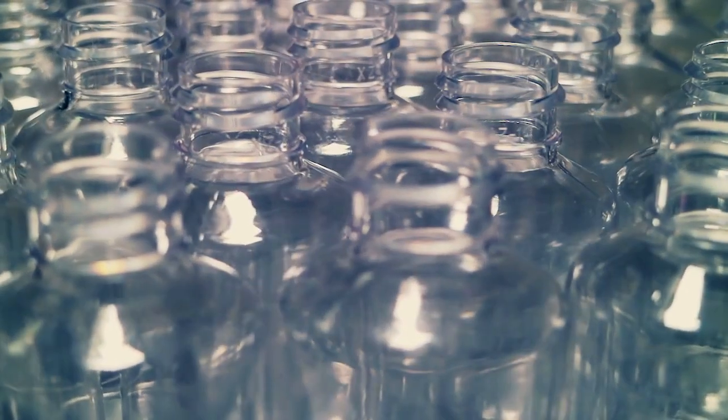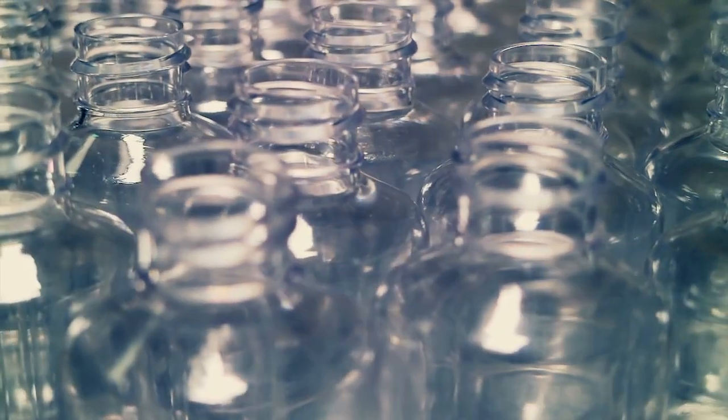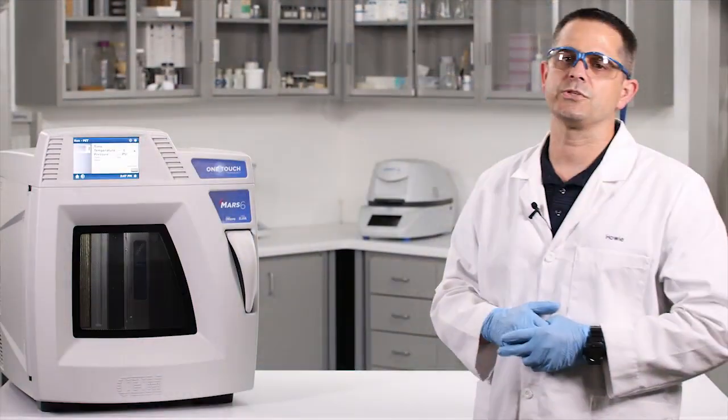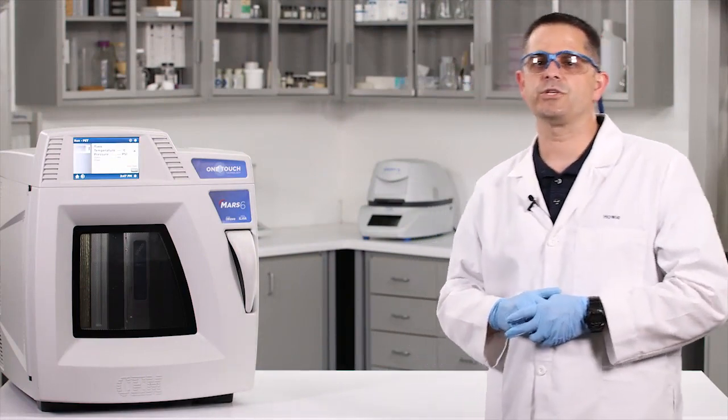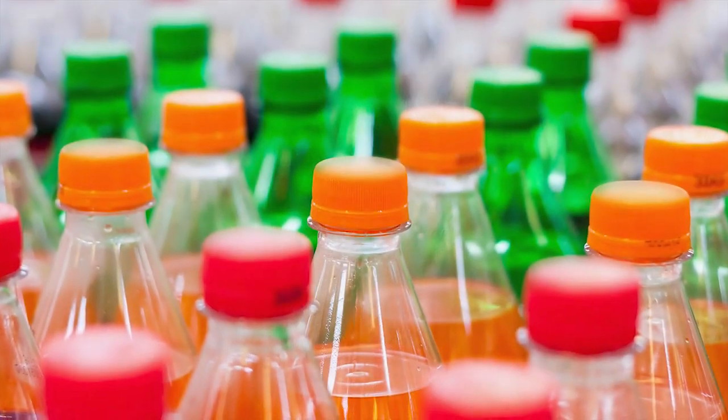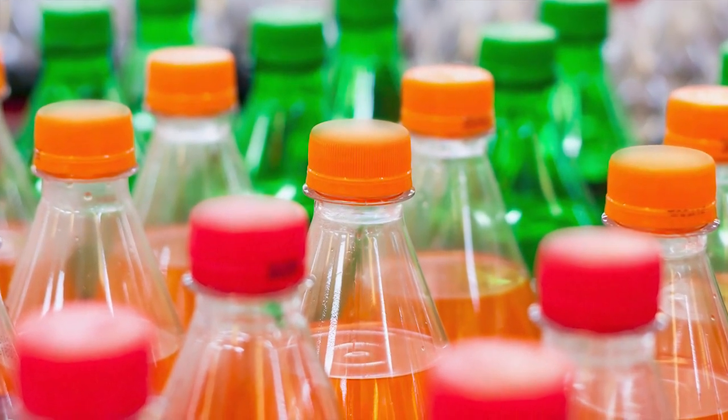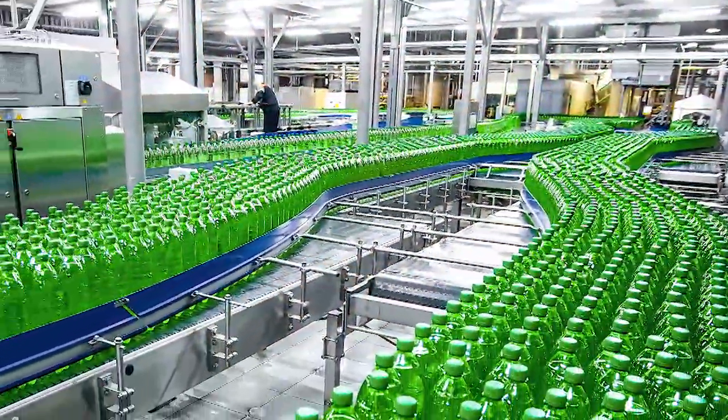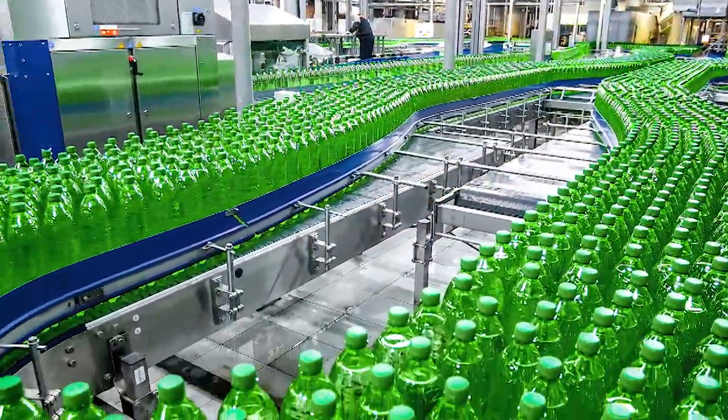In 1973, DuPont engineer Nathaniel Wyeth patented polyethylene terephthalate, or PET bottles - the first plastic bottles able to withstand the pressure of carbonated liquids. This created a much cheaper alternative to beverage bottling than was ever possible with glass.